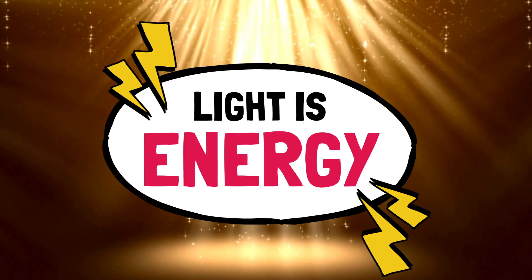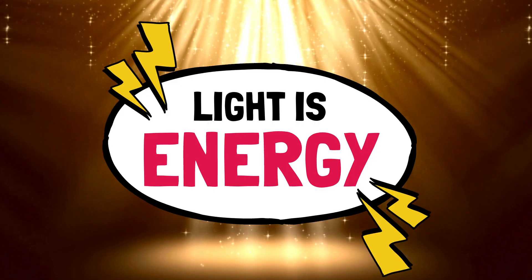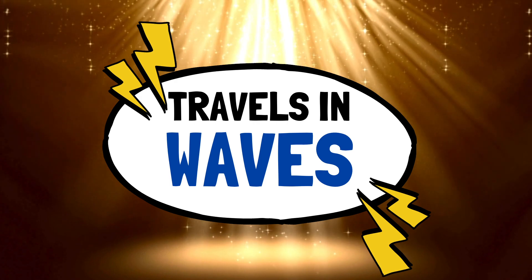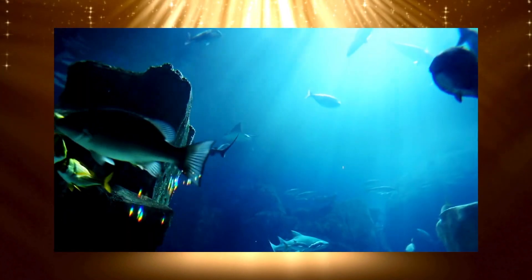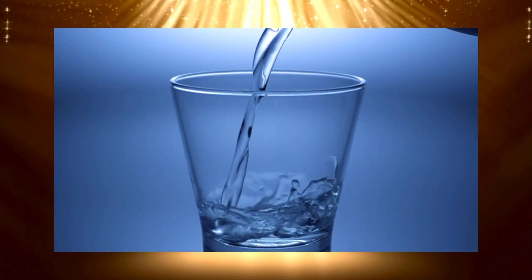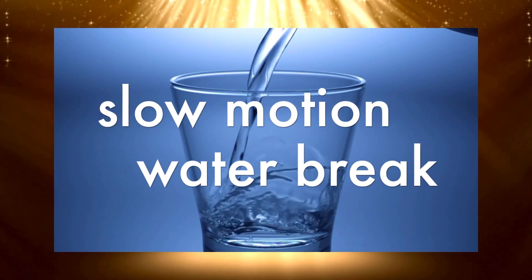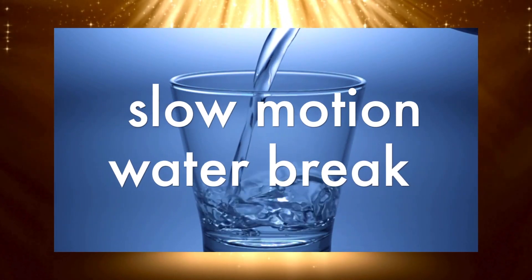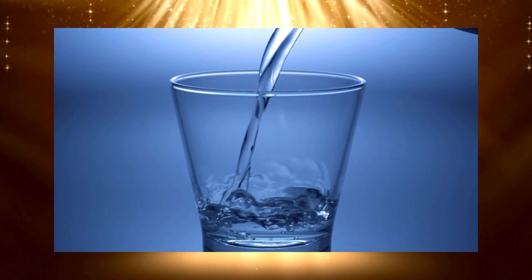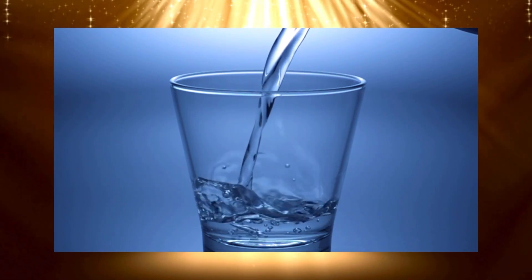Before we talk about color, let's first review what light is. Light is a type of energy that travels in waves. It can move through space and through other materials like air, water, and even this glass of water.